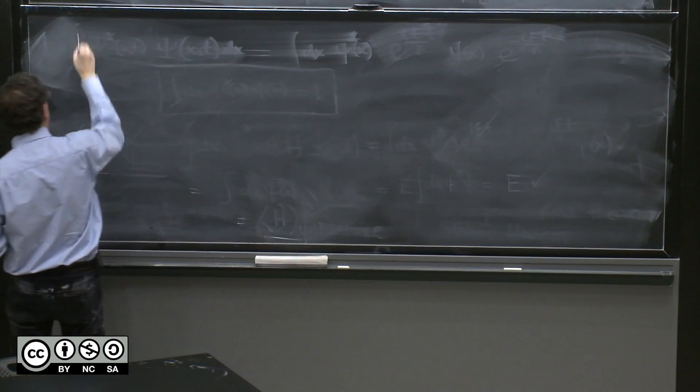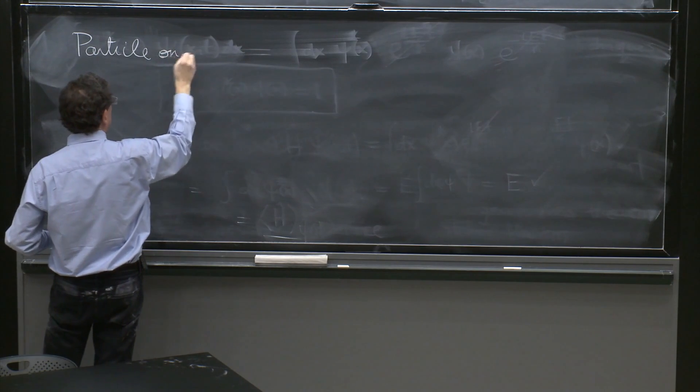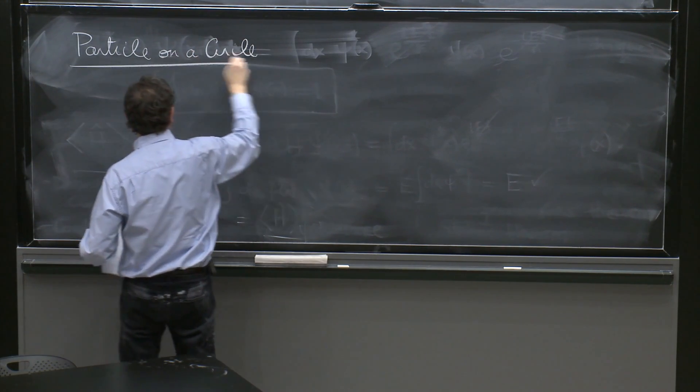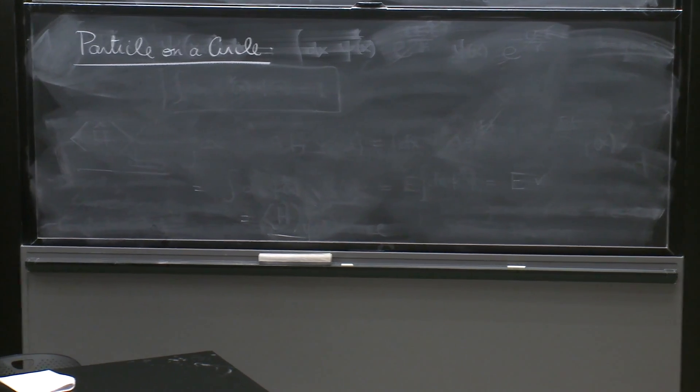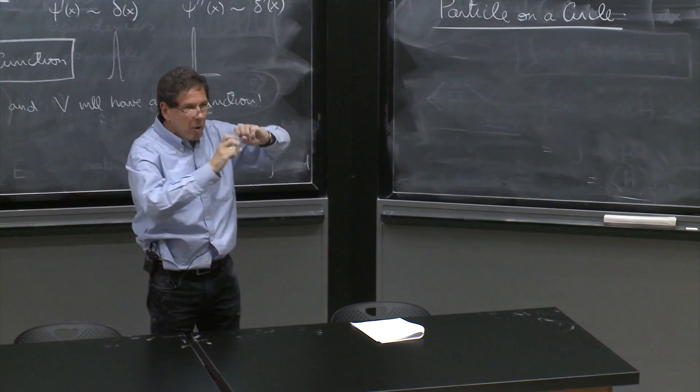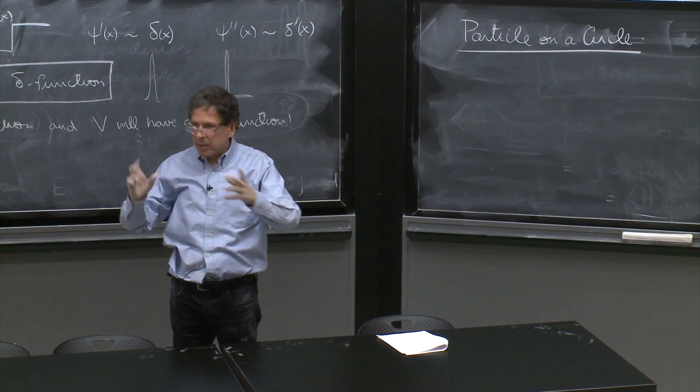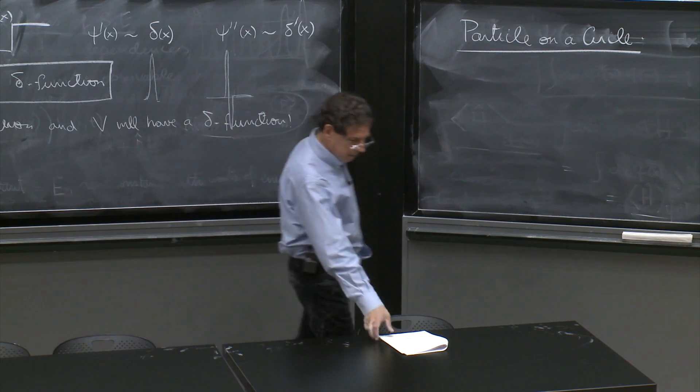A particle on a circle is our first example of solving the Schrödinger equation. Last time I showed you a particle on a circle, we wrote a wave function, and we said, let's see what is the momentum in it. But now let's solve completely this problem.